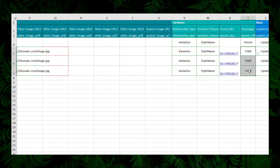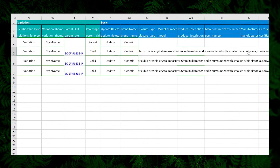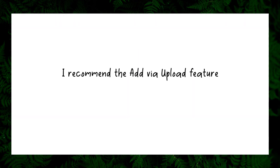For the child listings, list them as Child and provide the respective style names. For the parent you can leave the style blank. Upload the Excel file. In my experience this method is quicker — mostly within five to ten hours your listing will be live without any issues, so I prefer this method.